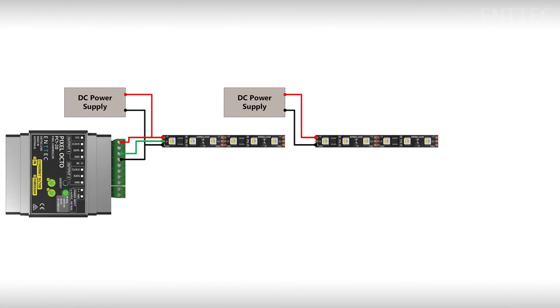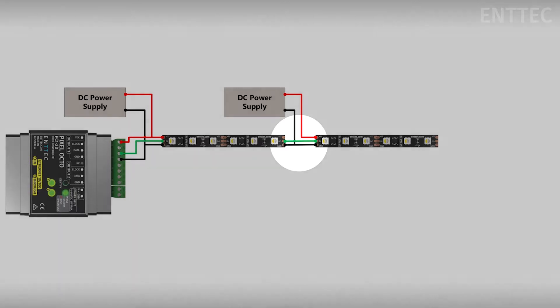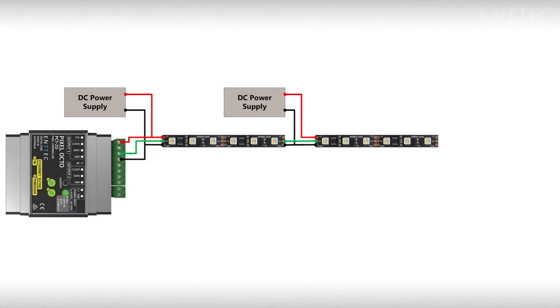In order to get our pixel patterns to flow through tape sections as one, we need to connect the output of the first section of tape to the input of the next section of tape like this. It's very important to note here that we're connecting the data and ground terminals between our tape sections only. We are not connecting VCC.